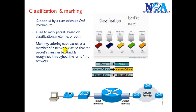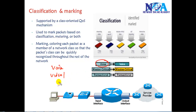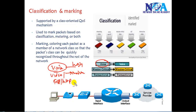The first QoS mechanism is classification and marking. In your network you are sending voice traffic, video traffic, critical traffic like database traffic, and some other traffic like FTP or HTTP. The first thing we do is classify traffic as high priority, medium priority, and low priority. Classification is a method of defining different types of traffic into different categories so that we can define what kind of priority should be given for which traffic.